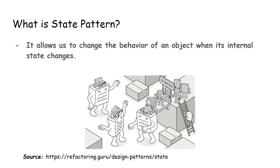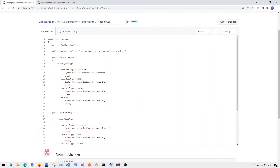The state pattern is a design pattern which allows us to change the behavior of an object when its internal state changes. Here in this image, which summarizes everything, we have these little states — the state can be one, two, a string, an integer, or any value. When the state changes, it will also change the behavior of an object, which could run, walk, stop, or do certain things.